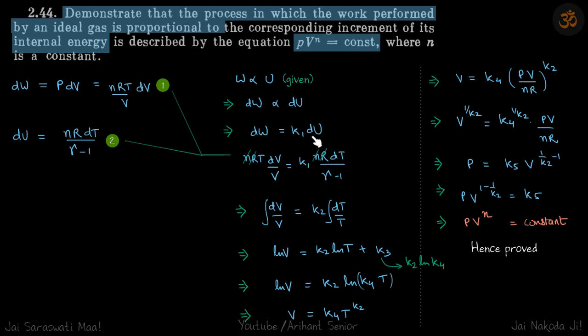So I put the value of DW and DU here, and we get DV by V is some constant K2 integral DT by T. So K1 upon gamma minus 1, we are writing as K2.